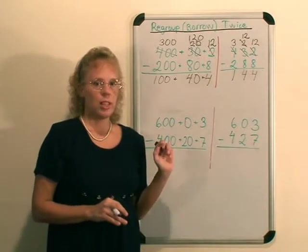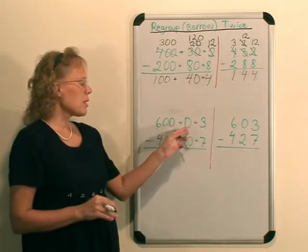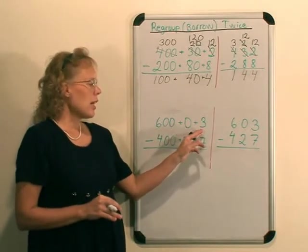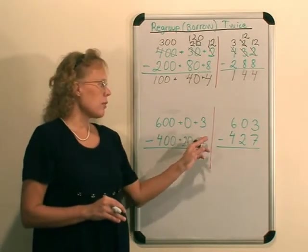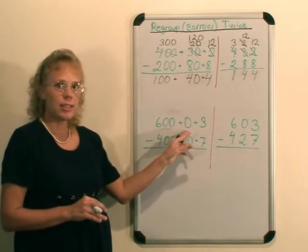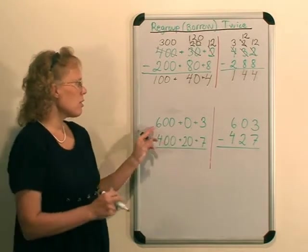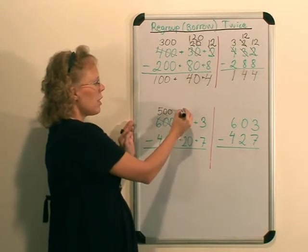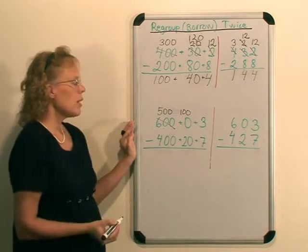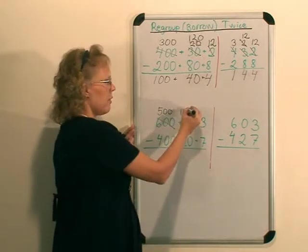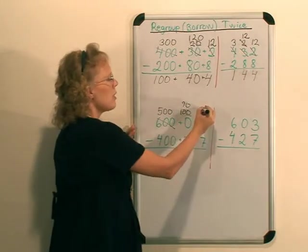After this there is still one more special situation for children to learn, and that is to borrow, so to speak, over a zero when there's a zero in the middle somewhere. We cannot subtract in the ones, 3 minus 7, so we would usually take a 10 from here, but there are no tens. So then we go straight to the hundreds and take 100, leaving 500, and the 100 moves here.